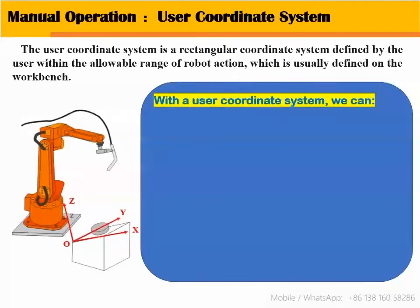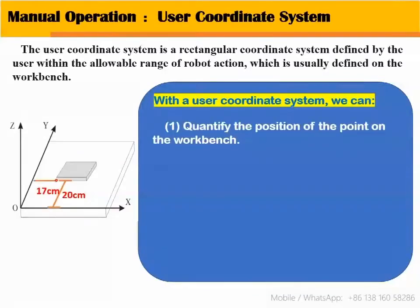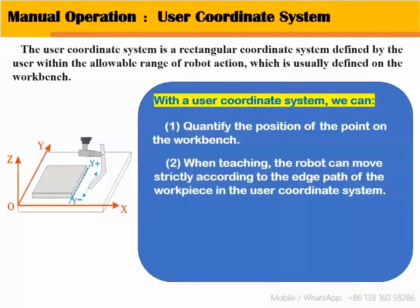With a user coordinate system, we can: 1. Quantify the position of points on the workbench. 2. When teaching, the robot can move strictly according to the end path of the workpiece in the user coordinate system.